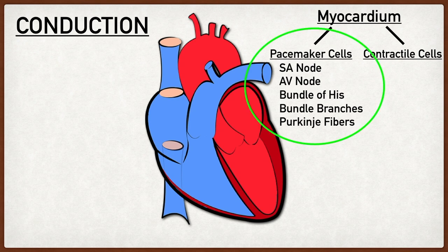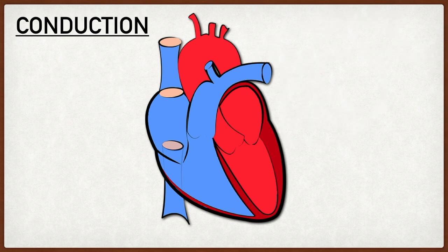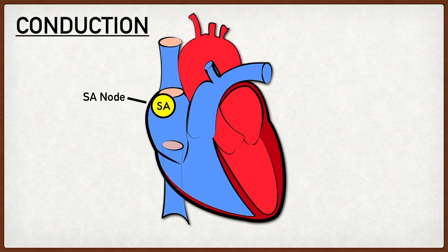We're going to focus on the pacemaker cells because that's what makes up the conduction system. In a normal functioning heart, the conduction system starts with the SA node. The SA node is composed of lots of pacemaker cells that have the ability to generate their own action potentials, and it is located in the back of the right atrium near the entry point of the superior vena cava.